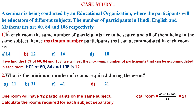Let me take question number 1. In each room, the same number of participants are to be seated, all of them being in the same subject. Hence, the maximum number of participants that can be accommodated in each room is what? A very simple clue: if we find the HCF of 60, 84, and 108, we will get the maximum number of participants that can be accommodated in each room. If the words 'greatest' or 'maximum' appear, we generally find the HCF.